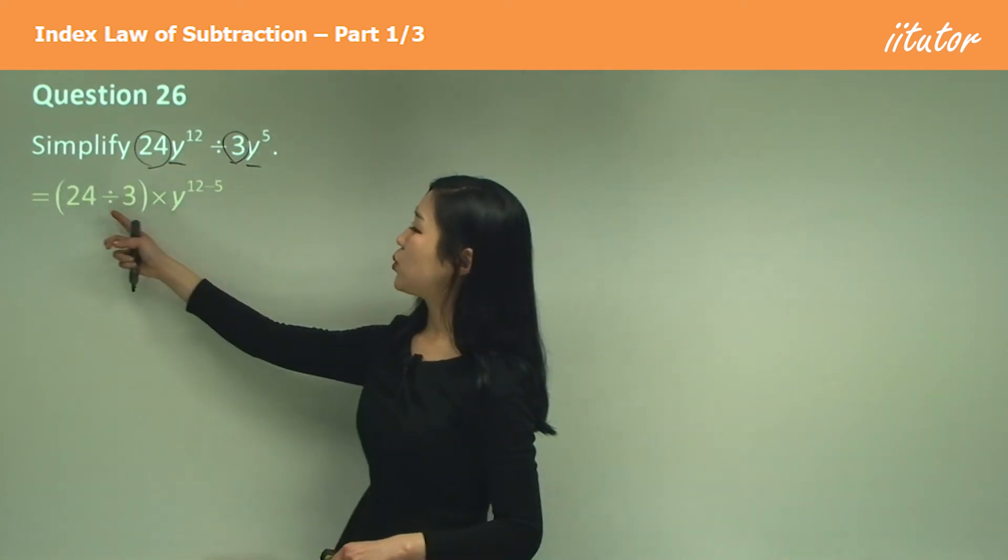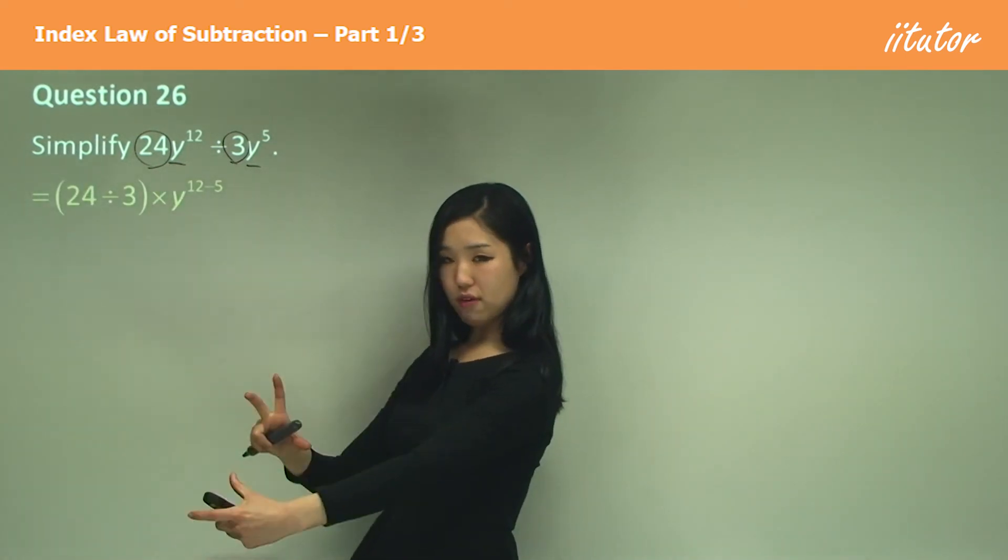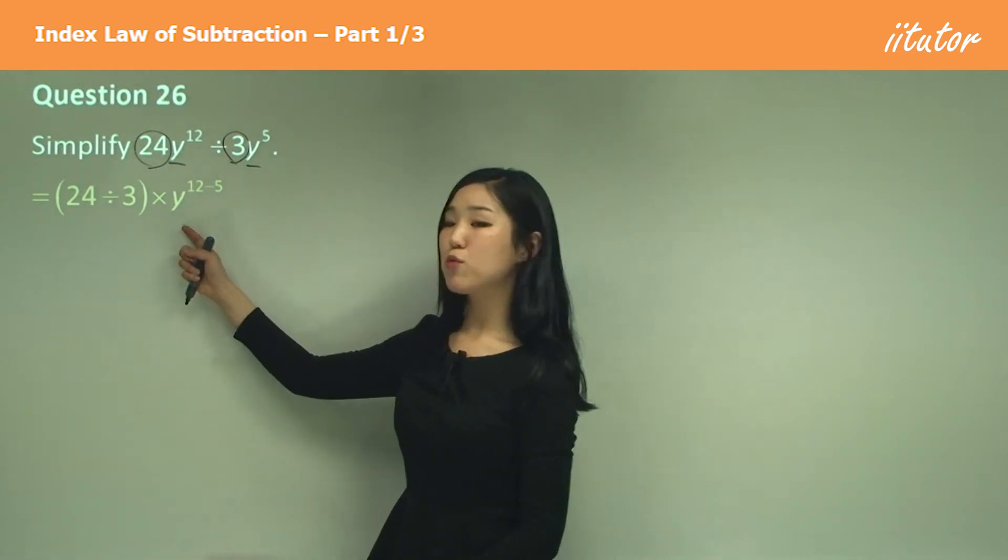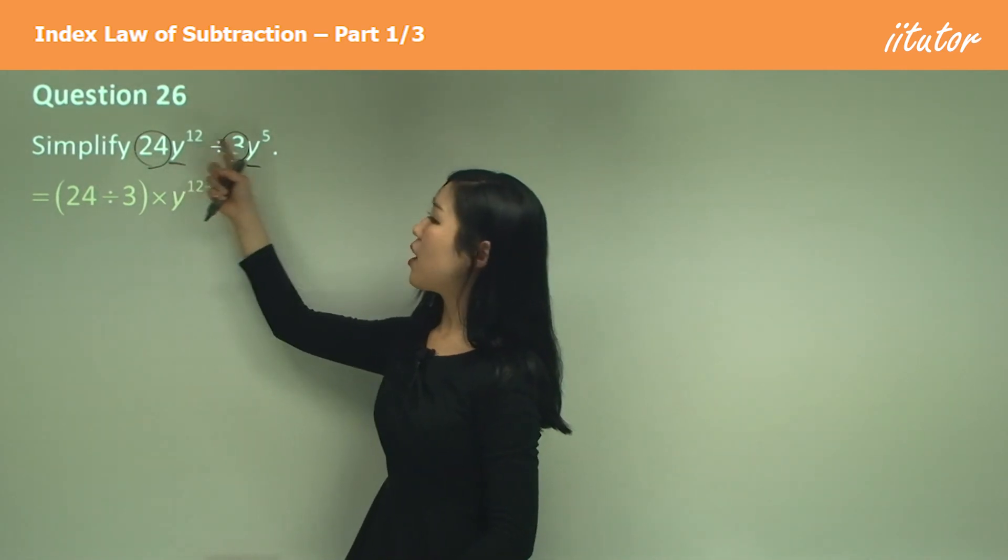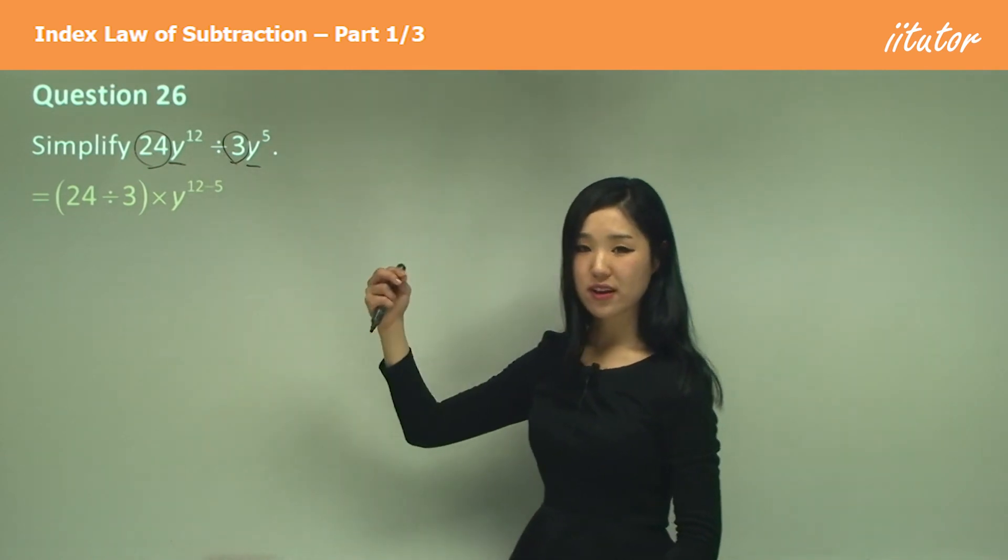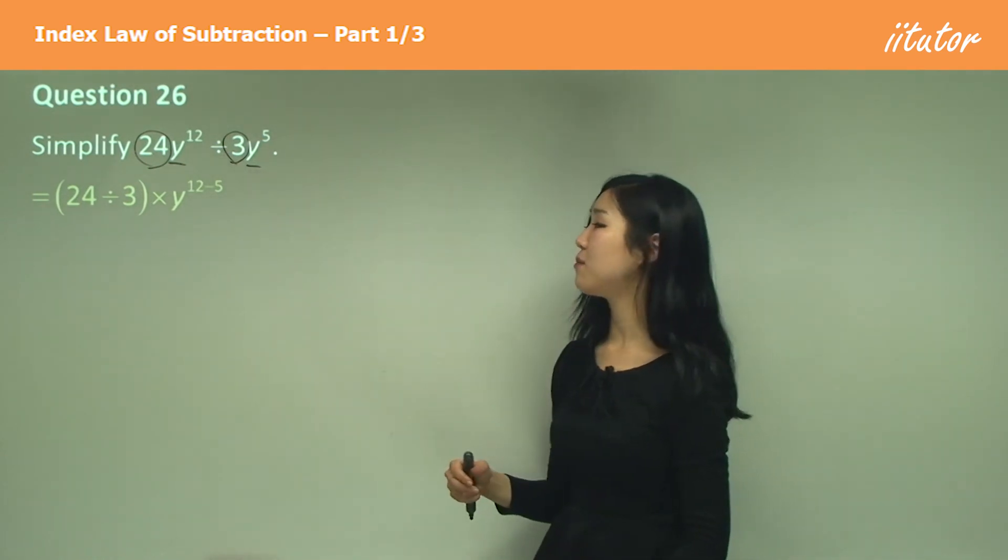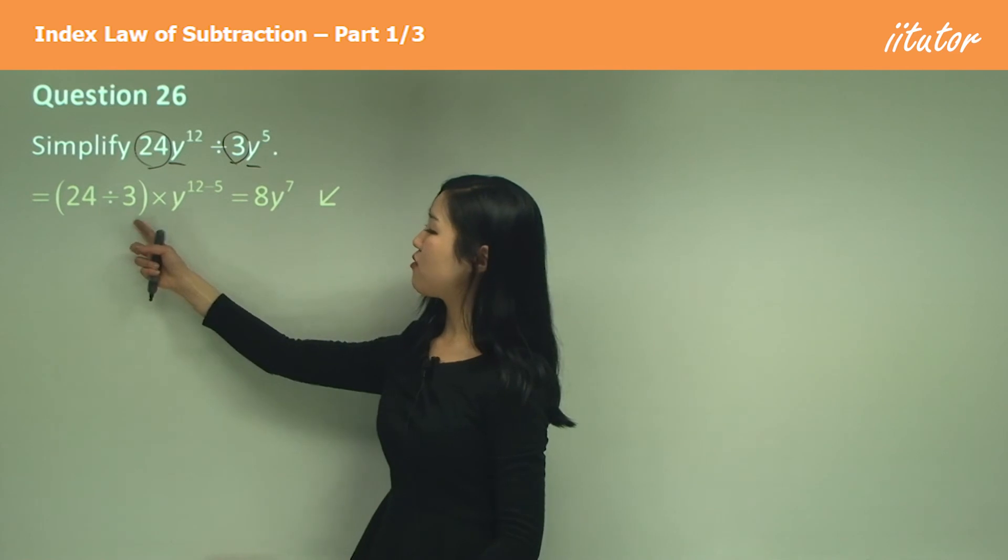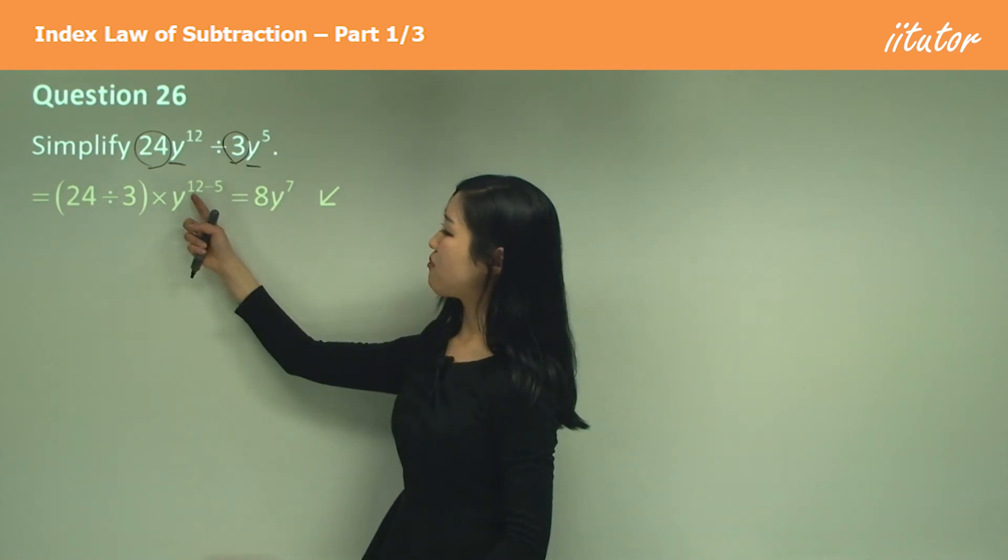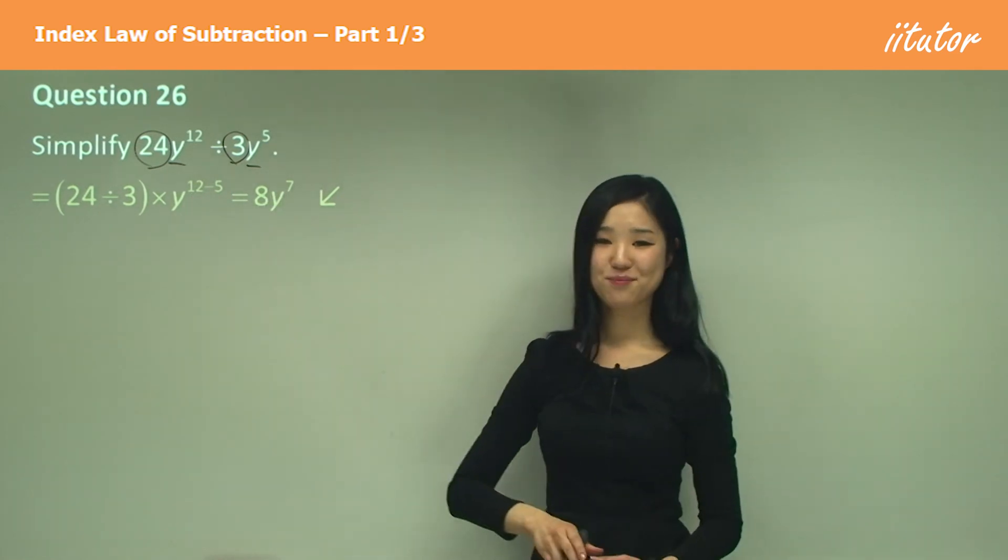So we put 24 divided by 3 out the front, and y will now have a power of 12 minus 5. We're subtracting again because we're dividing them. So simplify it: 24 divided by 3 is 8, and 12 minus 5 is 7.